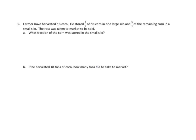Farmer Dave harvested his corn. He stored five-ninths of the corn in one large silo and three-fourths of the remaining corn in a small silo. The rest was taken to market to be sold. What fraction of the corn was stored in the small silo? Again, we'll make that diagram. Five-ninths, we'll partition it into nine equal parts. Five-ninths are the large silo. Three-fourths of the remaining. If we look at this, there's the remaining part. It's divided into four equal parts. Three-fourths goes into the small silo.